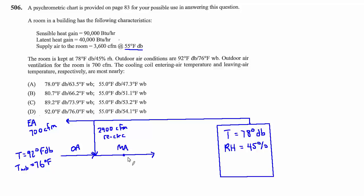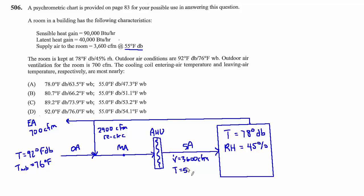Those two streams — recirculated room air and outdoor air — are mixing, giving us a mixed air condition. That mixed air enters the coil at the air handling unit (AHU), and off the coil we have supply air to the room: 3,600 CFM at a known dry bulb of 55 degrees, though the wet bulb is unknown. Since each answer choice has different entering air dry bulb temperatures, the fastest approach is to find the mixed air dry bulb temperature and match it to an answer.